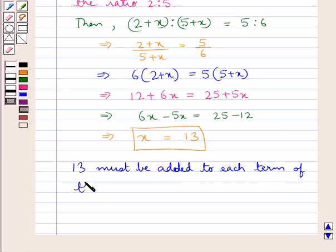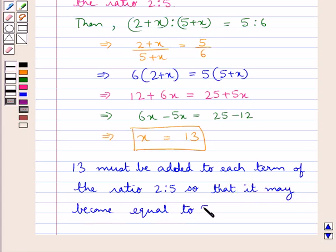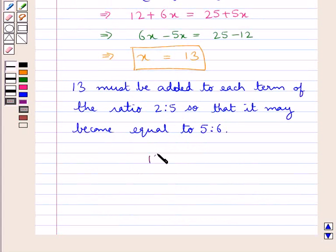of the ratio 2 is to 5 so that it may become equal to 5 is to 6. So 13 is our final answer.